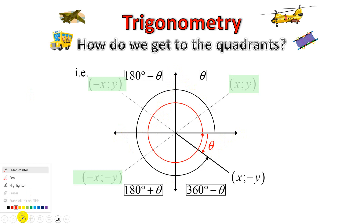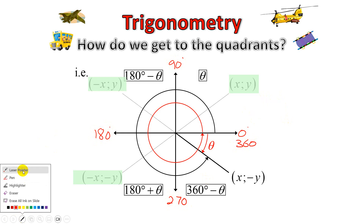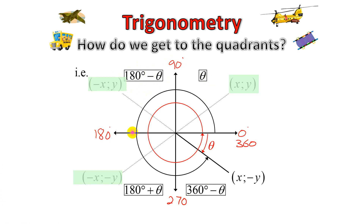In my diagram I want to put that down clearly. We're starting at 0, then we move on to 90, there's our 180 marker, here's our 270, and our revolution gives us 360. So in quadrant 1 we're talking about theta. When we move to quadrant 2, we refer to it as 180 minus theta. Jumping to quadrant 3, we look at 180 plus theta. And if we are in quadrant 4, that's 360 minus theta.